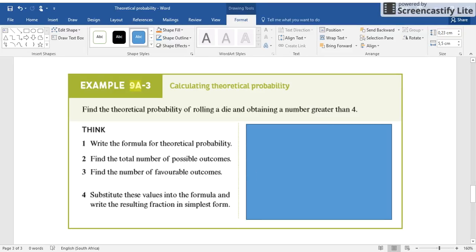Okay, so this one we're calculating the theoretical probability. Find the theoretical probability of rolling a die, I say dice, and obtaining a number greater than 4. So they're saying 5 or 6. What's the probability of getting a number of 5 or 6?